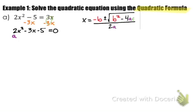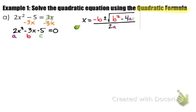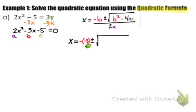Here's our formula: opposite b plus or minus the square root of b squared minus 4ac all over 2a. Our a is 2, our b is negative 3, and our c is negative 5. To find our solutions, we substitute those values in: x equals the opposite of negative 3, plus or minus the square root of negative 3 squared, minus 4 times 2 times negative 5, all over 2 times 2.